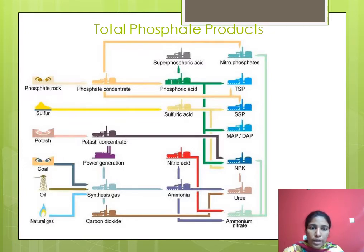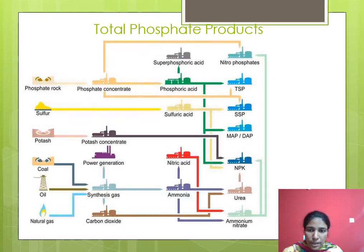So the phosphate products visible in the diagram are: nitrophosphate, triple superphosphate, single superphosphate, mono ammonium phosphate, diammonium phosphate, and NPK fertilizer. Other products from the same raw material chain include urea and ammonium nitrate.